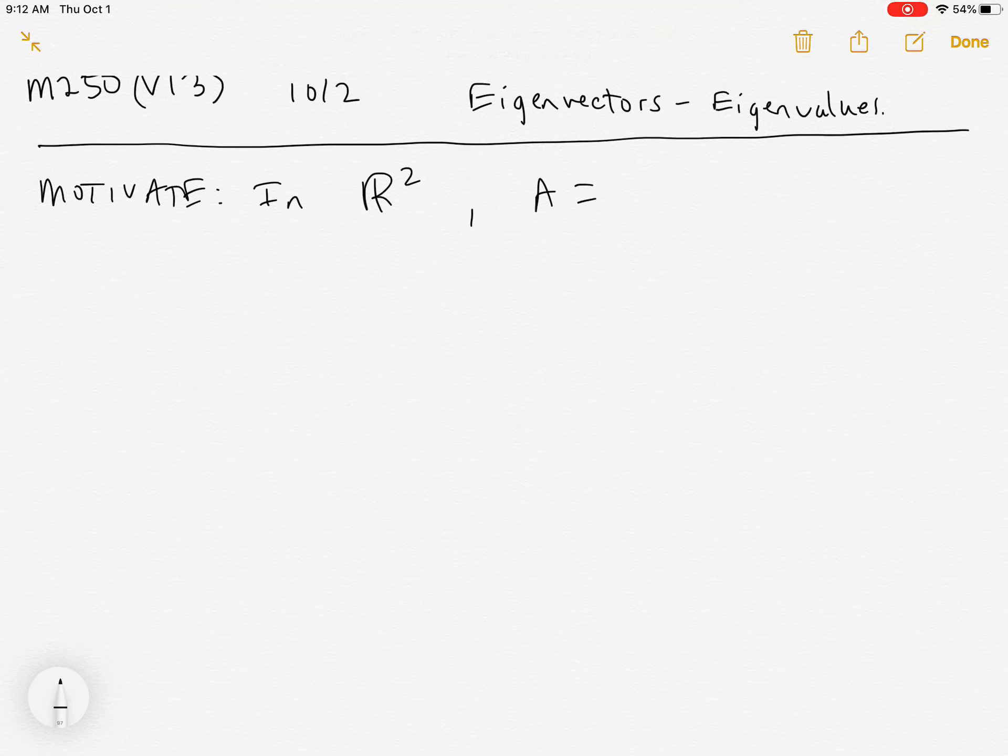We're going to let A be the matrix (1, 6, 5, 2). And the idea is, the question is, how does this matrix A act on vectors in R²?